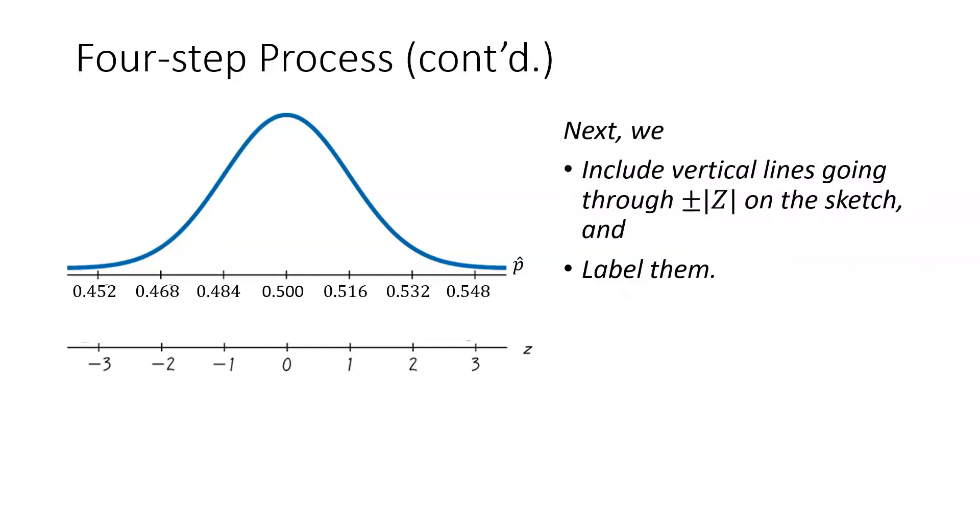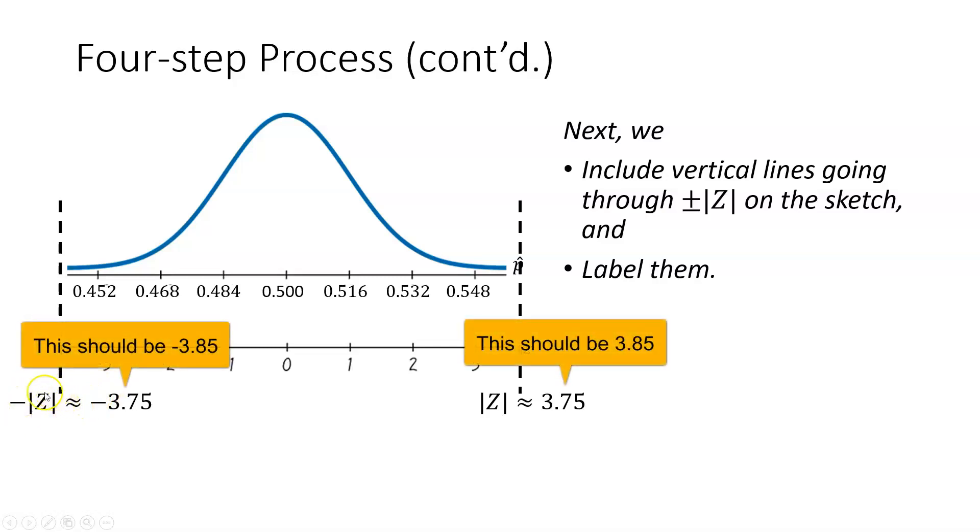The next step is I'm going to include some vertical lines going through plus and minus the Z-score. Notice that they are outside of the range of 3, at 3.75, to the left and to the right. I'm going to label those down below. Notice that I use absolute value symbols around the Z value to identify the negative absolute value of Z and positive absolute value of Z.